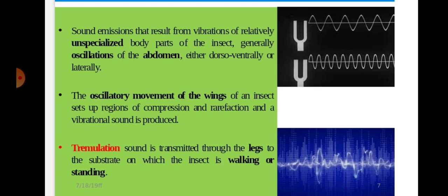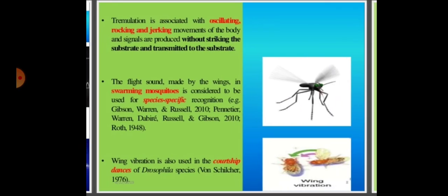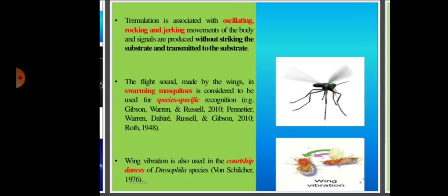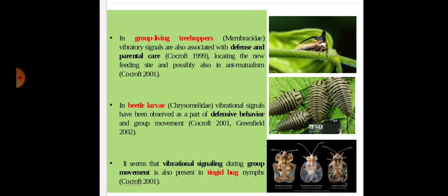Tremulation sound is transmitted through the legs to the substrate on which the insect is walking or standing. Tremulation is associated with oscillating, rocking and jerking movements of the body, and signals are produced without striking the substrate. The flight sound made by the wings in swarming mosquitoes is used for species-specific recognition. Wing vibration is also used in courtship dances of Drosophila species.